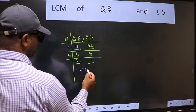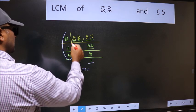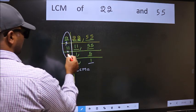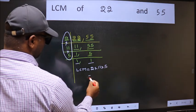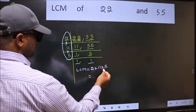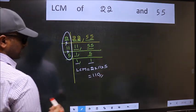So our LCM is the product of these numbers: 2 into 11 into 5. When we multiply these numbers, we get 110 as our LCM. So let's go to the next number.